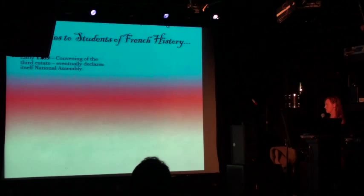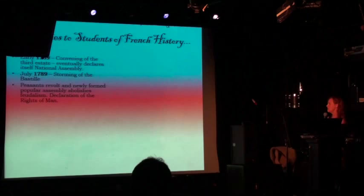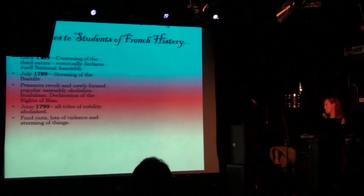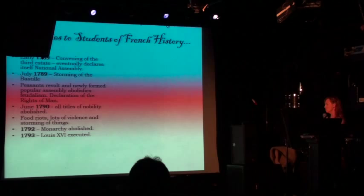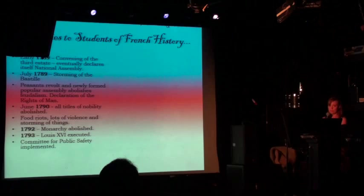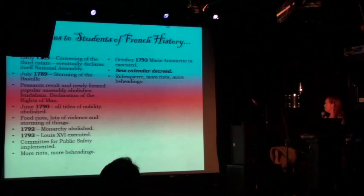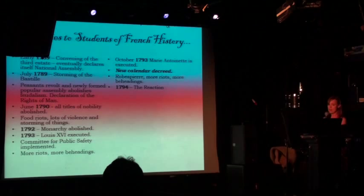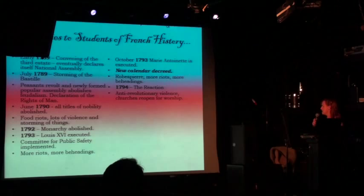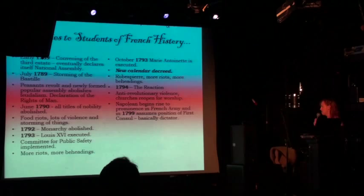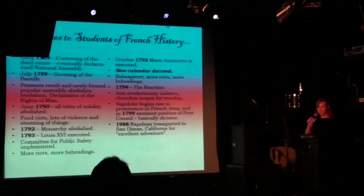This is going to go by very quickly. So 1789 is really when things get going — the convening of the Third Estate, the storming of the Bastille in July 1789, a peasant revolt thereafter, the Declaration of Rights of Man, very important. 1790, all titles of nobility abolished. With more riots, the monarchy officially abolished in 1792. 1793, Louis XVI was executed, the Committee for Public Safety is implemented, they went around killing everybody, more riots, more beheadings. Marie Antoinette is executed, and then the new calendar is decreed, which we're going to be talking about. Then Robespierre rises to power, more riots. 1794 is the reaction — that's when the ruling class had had enough and decided to fight back. Napoleon begins his rise to prominence in the French army and becomes dictator. And then of course, in 1988, Napoleon transported to San Diego, California for an excellent adventure.